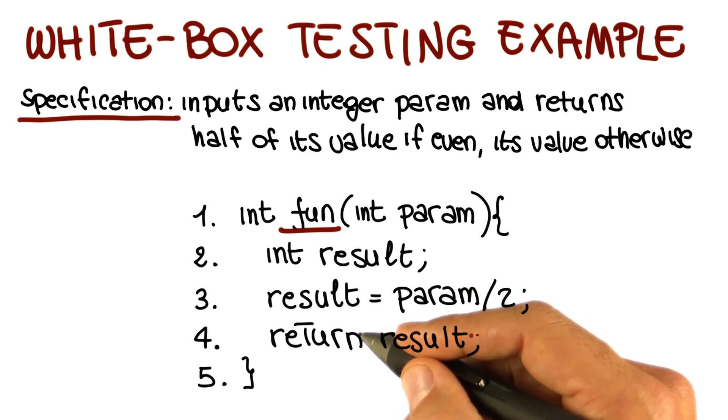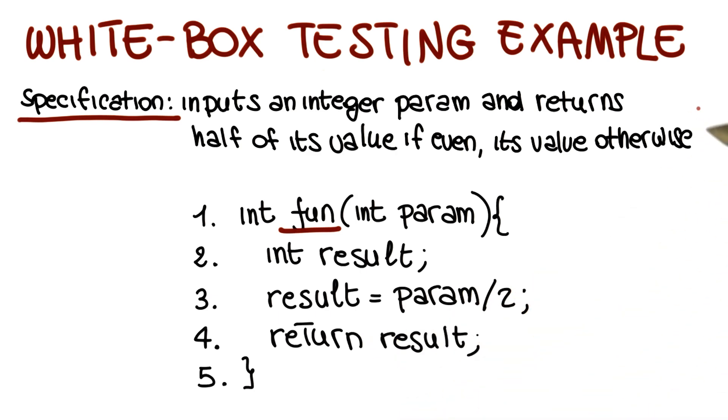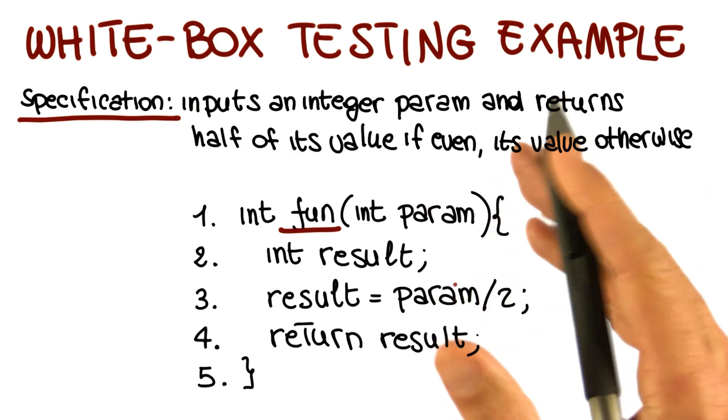Conversely, if we were to work in a black box manner, typically looking at the specification, we will select at least one odd and one even input number to exercise all of the specified behavior, and we will find the problem right away.